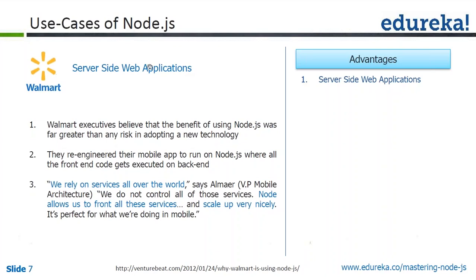What Walmart did was re-engineer their mobile app to run on Node.js, where all the front-end code gets executed on the back-end. Their VP of mobile architecture noted that because Walmart relies on services from a lot of vendors and service providers, they built a Node layer as a front-end to those services.